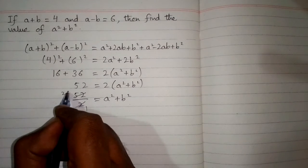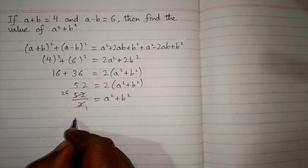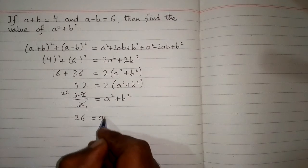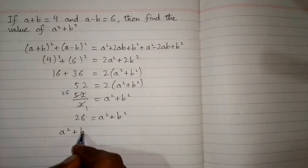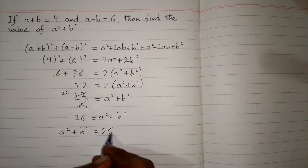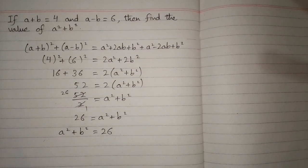Now 2 ones are 2, 2 twos are 4 and then 2 sixes are 12 so we have 26 is equal to a square plus b square. So the value of a square plus b square is equal to 26 and this is the required answer.